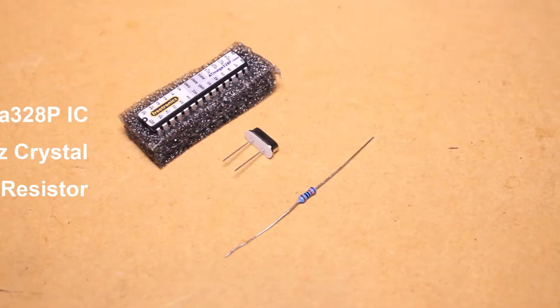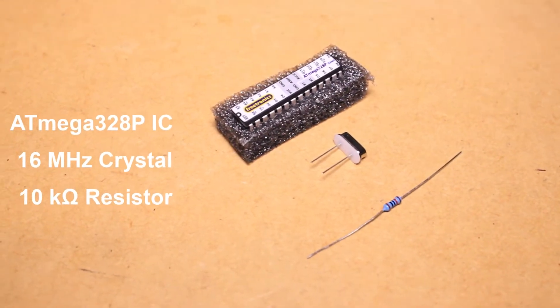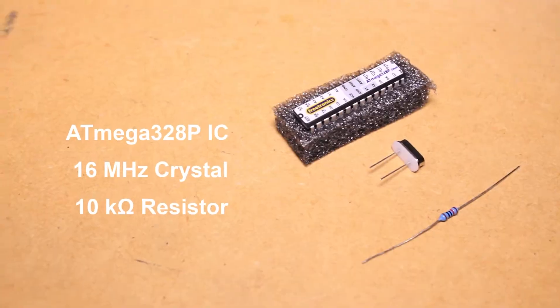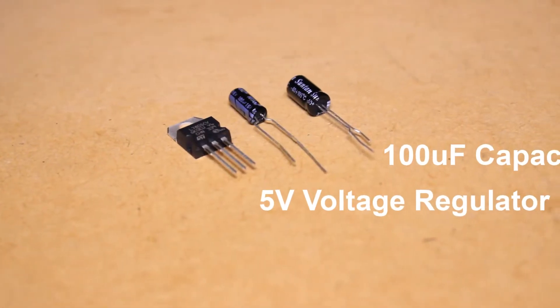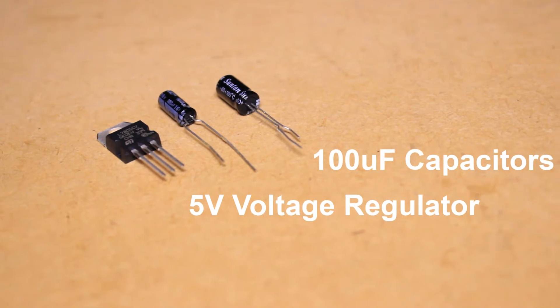For this project you will need an ATmega328P IC, a 16MHz crystal, a 10kΩ resistor, two 22pF capacitors, two 100µF capacitors, and a 5V voltage regulator.